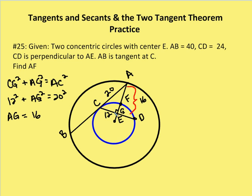CG squared is my base squared plus AG squared, is equal to my hypotenuse squared. I was able to figure out that AC and CB are going to be congruent, because if I draw E to C, this point of tangency is going to be the perpendicular bisector of this chord in the larger circle. So AC ends up being congruent to CB. I know that AB is 40 units, so AC, my hypotenuse for this triangle GAC, is equal to 20. So I can figure out using my 3-4-5 Pythagorean triple that A to G is going to be 16 units.